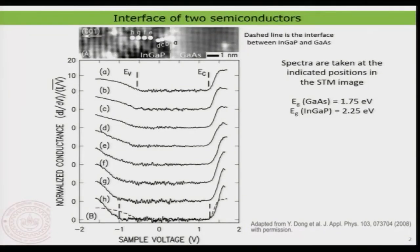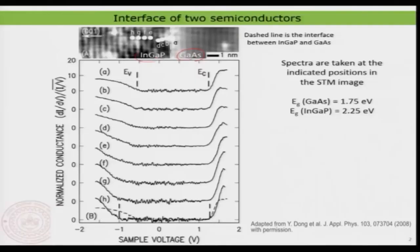I have chosen a typical example so that we can understand a few aspects of spectroscopy at interfaces. What we have here is a gallium arsenide and an indium gallium phosphate interface. This interface is prepared by an epitaxial method as discussed in the previous class, and after making the interface they have taken a cross-sectional profile through scanning tunneling microscopy.